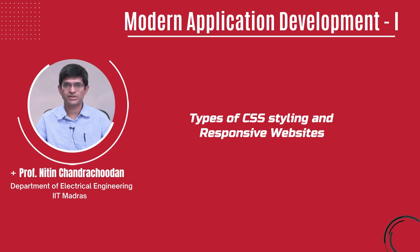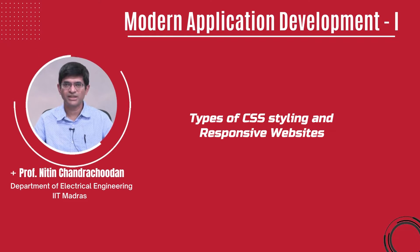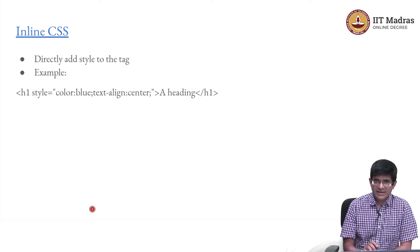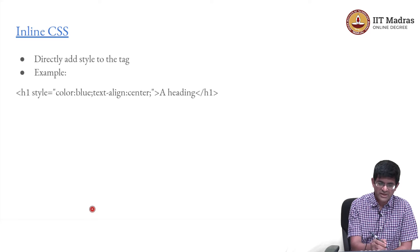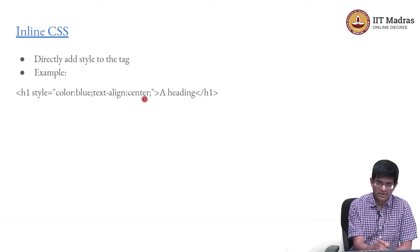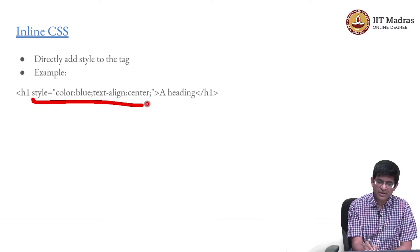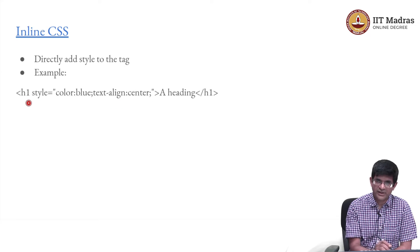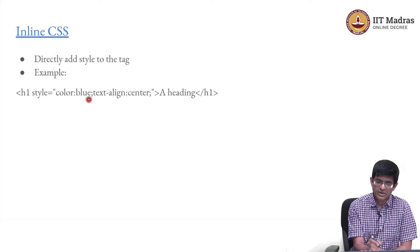Hello everyone and welcome to this course on Modern Application Development. How do I specify styles if I wanted to overwrite them? One way would be to directly add style to the tag. For example, in the H1 definition I can put in what are called attributes. Everything which comes after this H1 are attributes interpreted as being part of the H1 definition, and in this case it is a style attribute which specifies the color to use and how to align it.